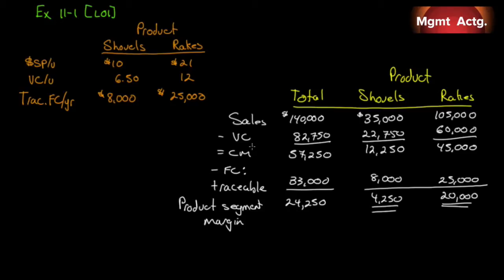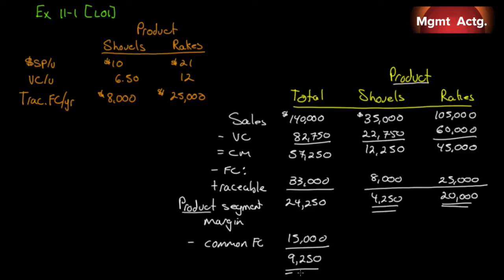Let's be careful about the word 'margin.' We take contribution margin, subtract traceable fixed costs, and get a segment margin. The type of segment margin is determined by how we break down segments — if it were by geographic region (north and south), it would be called a geographic segment margin. Now we deduct our common fixed costs of $15,000 from the total only — common costs are never allocated to individual segments. This gives us our operating income.